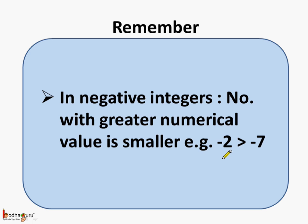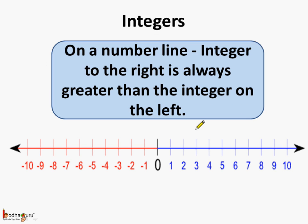For example, minus 2 is greater than minus 7. Minus 7 has a greater numerical value and it is smaller than minus 2. So we see, in case of negative numbers, as the numerical value increases, the value of the number decreases — hence minus 2 is greater than minus 7. In general, on a number line, the integer to the right is always greater than the integer on the left. For example, 3 is greater than 2 as 3 lies on the right side of 2. And minus 5 is greater than minus 6 because minus 5 lies on the right side of minus 6.